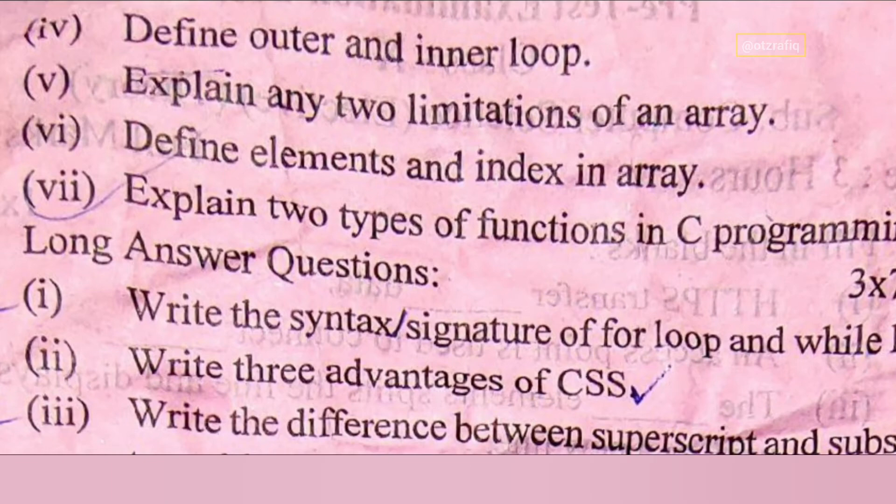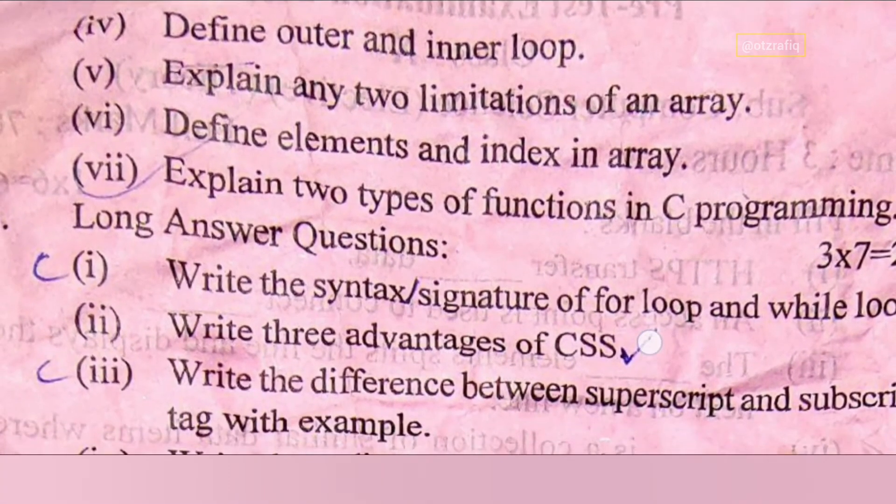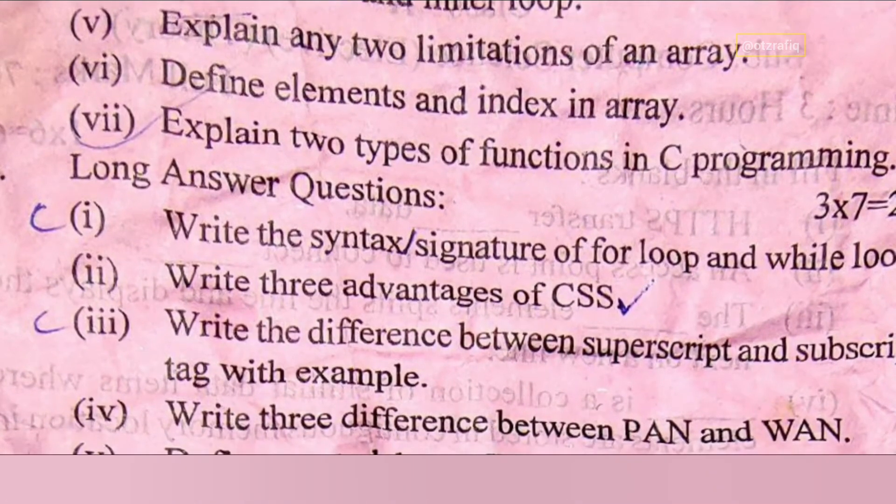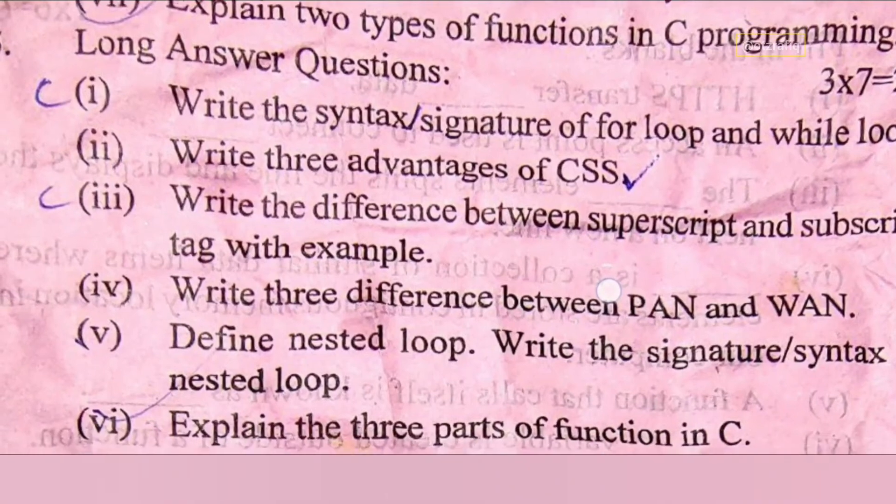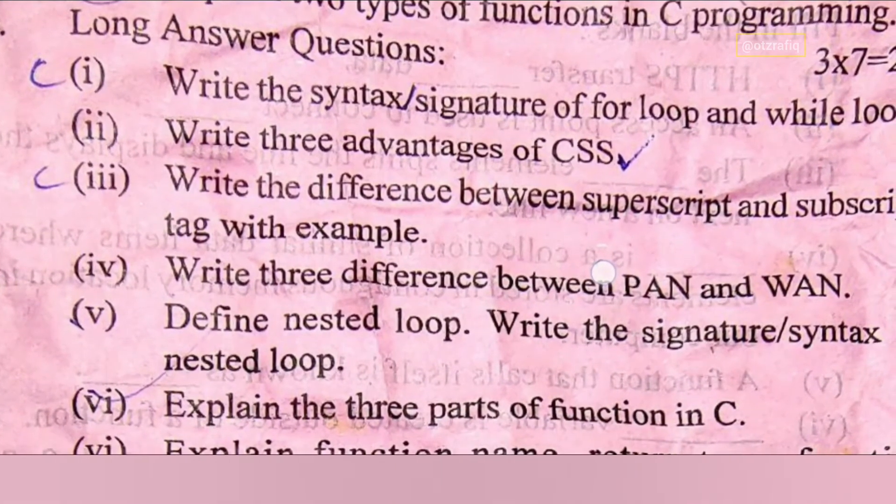Number four: define the element and index in an array - this is also from exercise, you can write it from there. Number seven: explain two types of function in C programming. This is user-defined and library function from exercise, you can write it from there. Write the syntax signature of for loop and while loop - you will write the format for that.